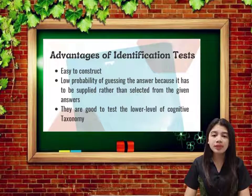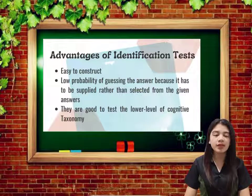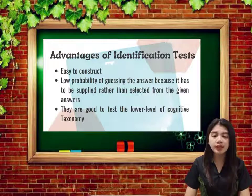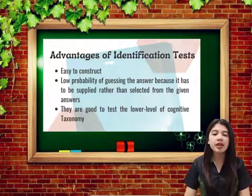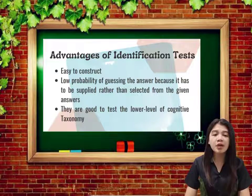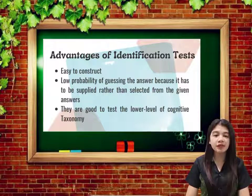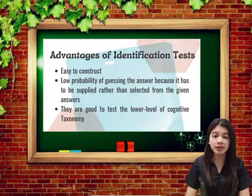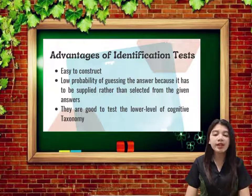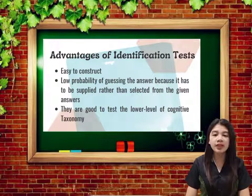Let's proceed to the advantages of identification test. The first one is it is easy to construct. The second is it has a low probability of guessing the answer because the answer has to be supplied rather than selected from given answers. The third one is they are good to test the lower level of cognitive taxonomy.